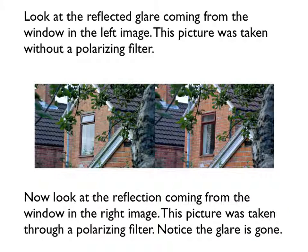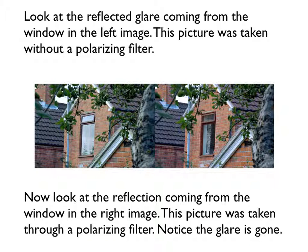Here are two pictures of the same scene. The picture on the left was taken without a polarizing filter — notice the reflection in the window. The picture on the right was taken with a polarizing filter placed over the camera lens — notice the reflection in the window is gone. When light from the sky reflects from the window, it becomes partially polarized in a plane parallel to the surface of the glass. If the orientation of the polarizer is perpendicular to the polarization of the reflected light, the glare is reduced or eliminated.